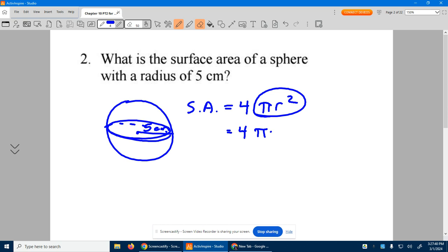Four times pi times the radius, which was five squared, which is four times pi. Five times five is 25. The exact answer is 100 pi.